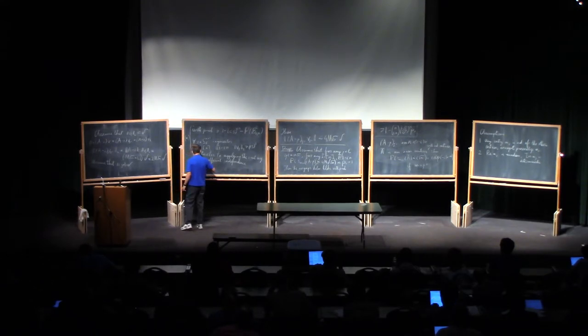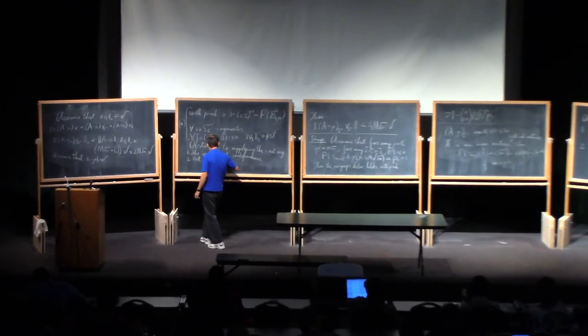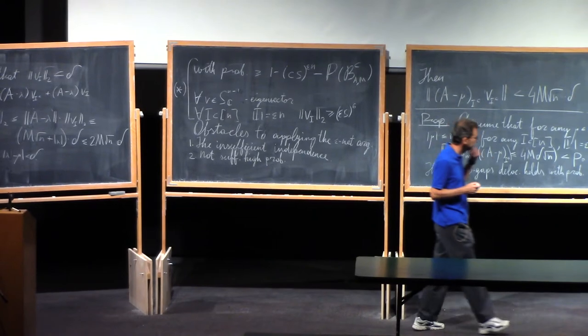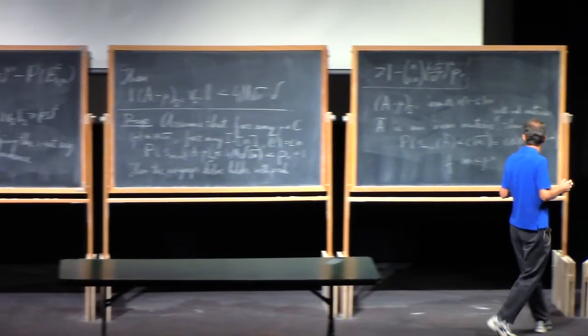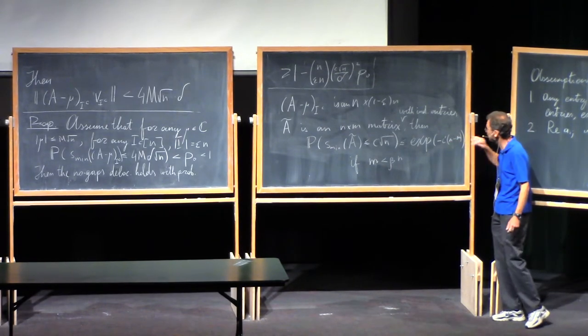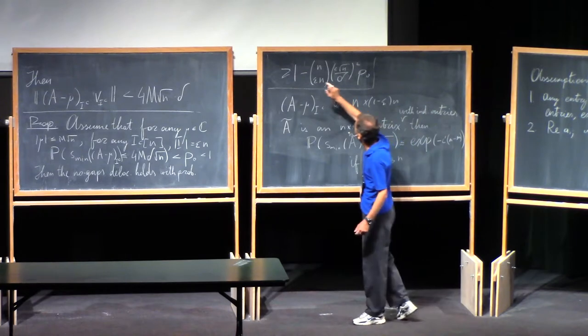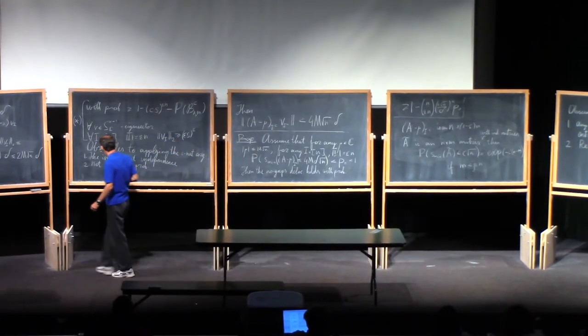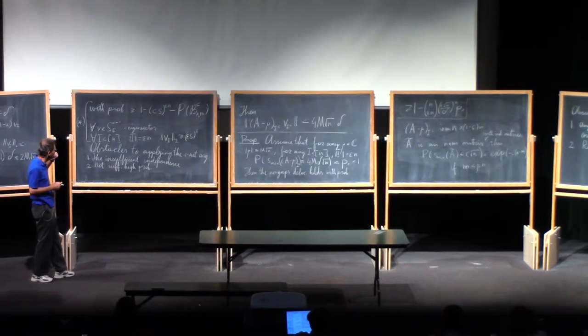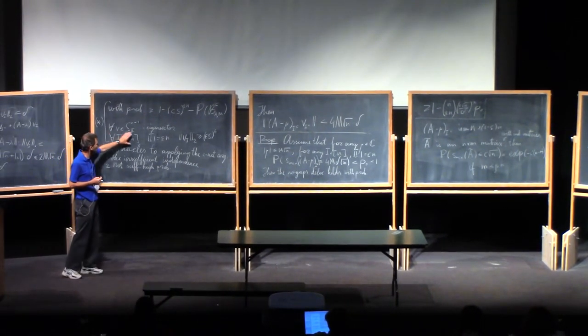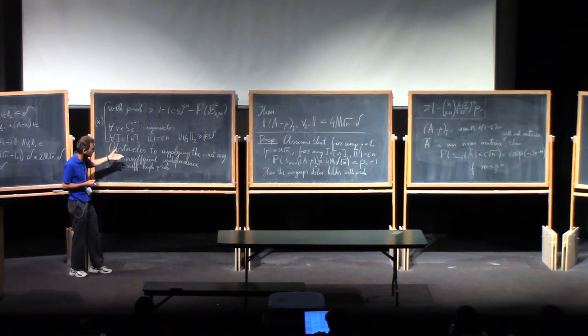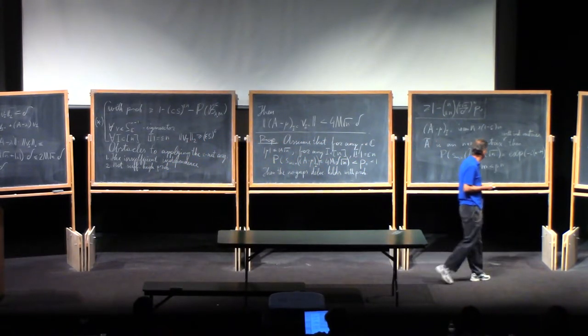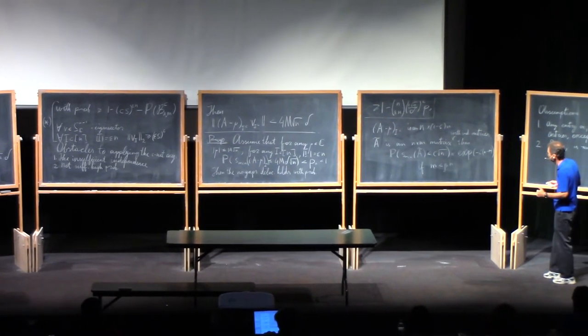The second obstacle is not sufficiently high probability. Although the epsilon net argument, at least the elaborate epsilon net argument with the splitting to compressible and incompressible vectors, yields the exponential probability, we need a superexponential one. But then, suppose that we can overcome even this, or suppose that our problem is more moderate. Instead of having it for all i's, we want to have it for a single i. Let's compromise on everything. But even then, we would hit the third obstacle.